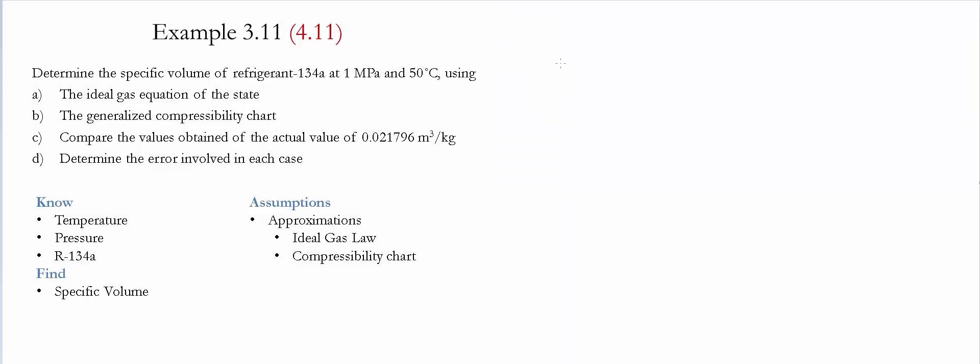We start with the ideal gas law. For that we need the value of R for the refrigerant which is equal to 0.08149 kilojoules per kilogram Kelvin. The next step is to find the value of specific volume.